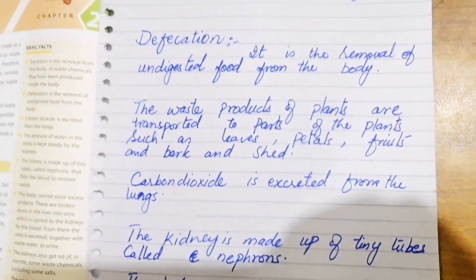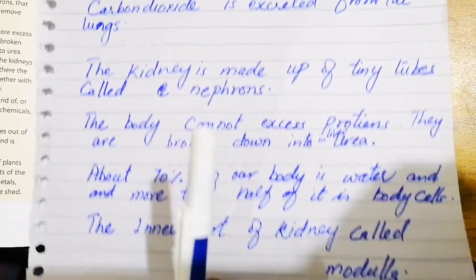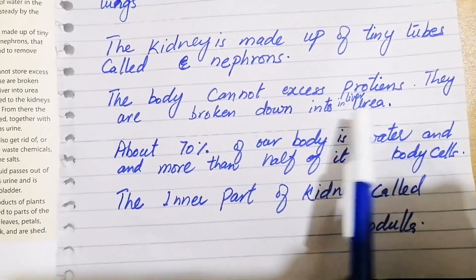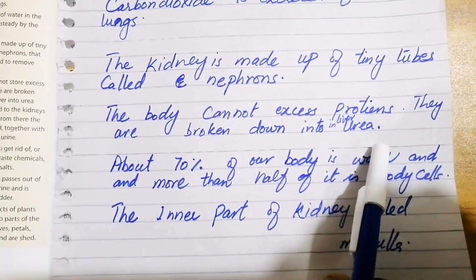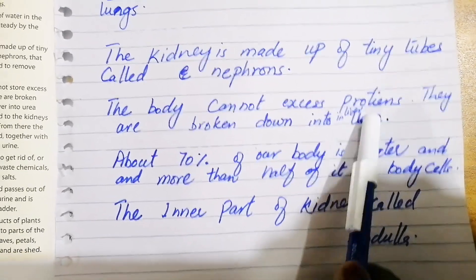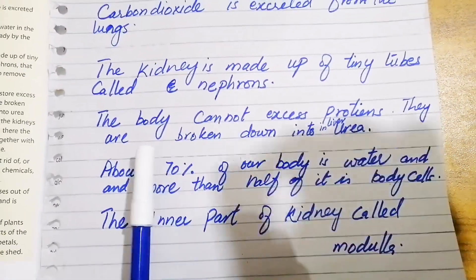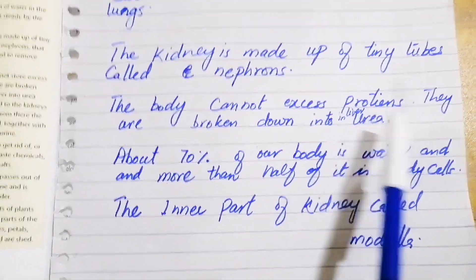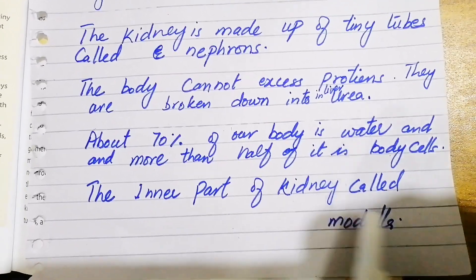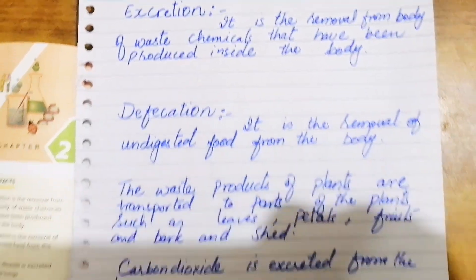The kidney is made up of tiny tubes called nephrons. The body cannot store excess protein; it is broken down in the liver and converted to urea. About 70% of our body is water, and more than half of it is inside the cells. The inner part of the kidney is called the medulla. Next lesson we will do a complete explanation of the function of the kidney. Thank you.